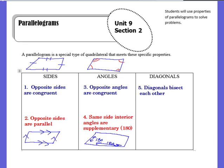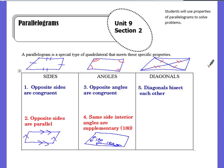For the diagonals, you should know that the diagonals bisect each other. Now, it doesn't mean that the diagonals are the same length — it just means that they cut each other in half. So these two pieces would be equal, and these two pieces would be equal. But again, they do not have to be the same length.